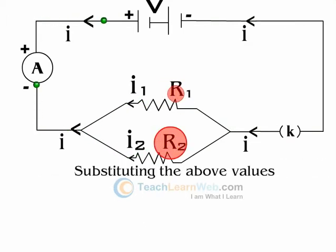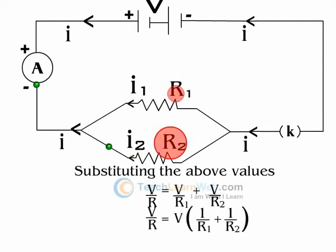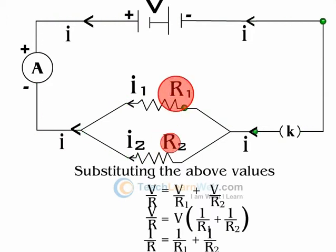By substituting the above values in equation 1, V/R = V/R1 + V/R2. V/R = V(1/R1 + 1/R2), or 1/R = 1/R1 + 1/R2.